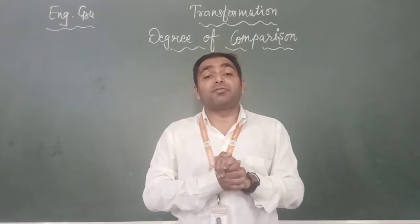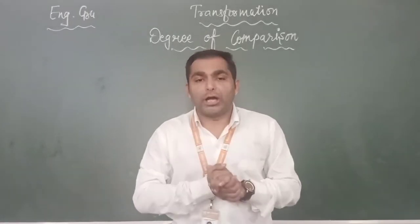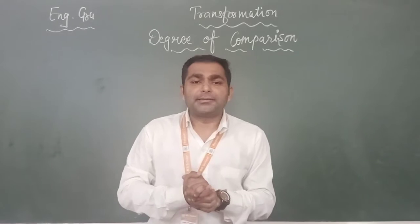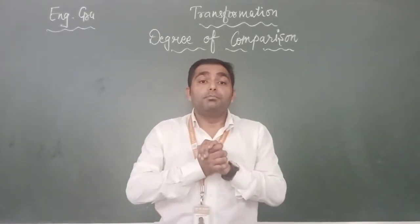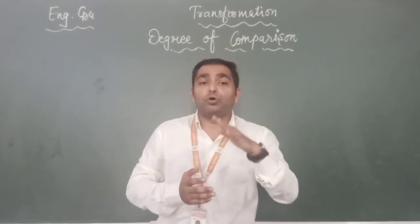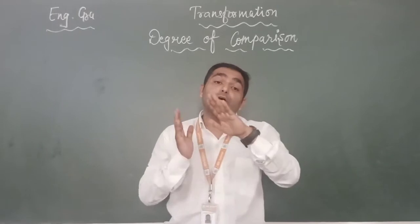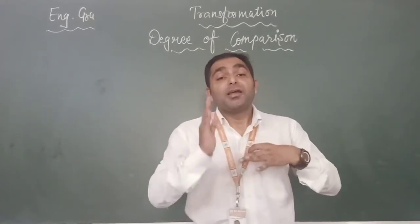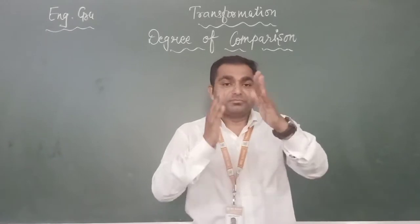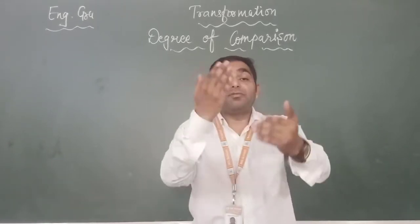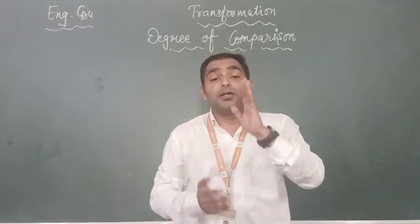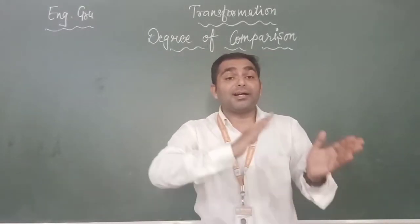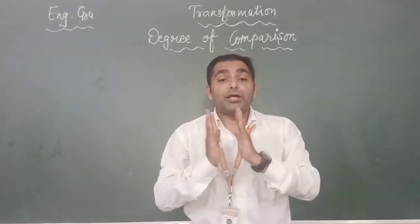One more hint: whenever we have irregular adjectives like beautiful, interesting, courageous, or intelligent, we do not add 'er' after the adjective. Instead, we use the word 'more' before the adjective. So when changing from positive to comparative degree with such adjectives, we write 'more beautiful than,' 'more interesting than,' 'more courageous than,' or 'more intelligent than.' That is how we make the change.